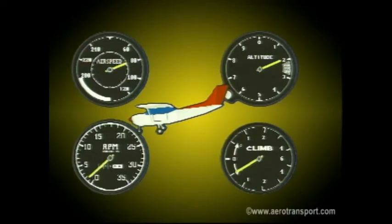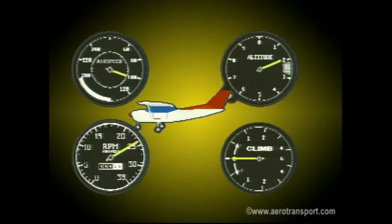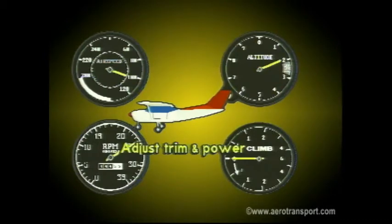Next, bring the power level up to the setting for cruise flight. Get into the cruise attitude and maintain it until the aircraft accelerates to cruise speed. Use the rudder to counter the left yaw produced by the increased power. Now trim the aircraft, then adjust the power and flight controls to maintain the desired airspeed and altitude. Retrim as necessary.